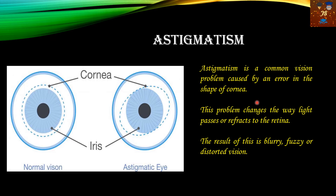Astigmatism is a common vision problem caused by an error in the shape of the cornea. In the case of astigmatism, the main problem occurs in the cornea. You can see in the picture that in normal vision the cornea has a certain shape, but in the case of an astigmatic eye it is de-shaped — the shape of the cornea is changed. This problem changes the way light passes or refracts to the retina, causing blurry, fuzzy, and distorted vision.